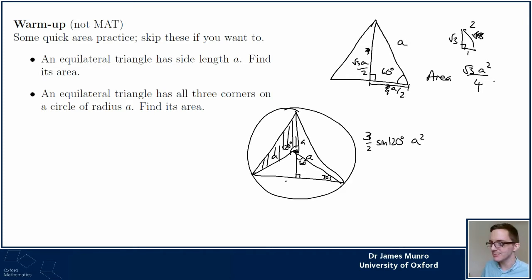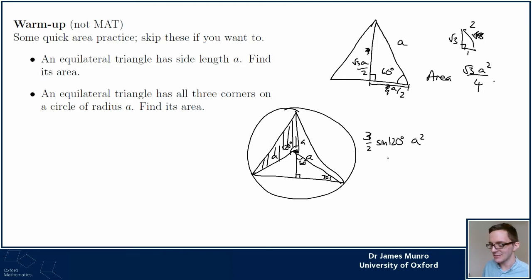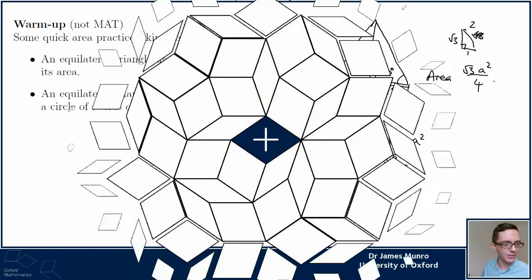I need to work out sin(120°). Do I know sin(120°)? It's the same as sin(60°) = √3/2. So is this one going to be 3√3/4 · a²? That's three times as big. Someone in chat will tell me if that's wrong.